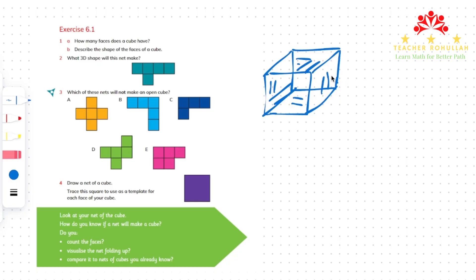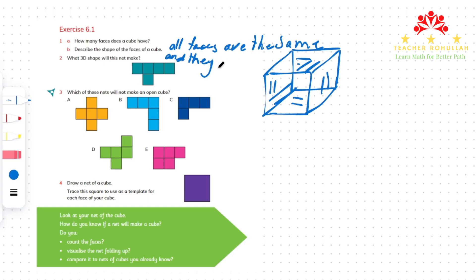Part B says describe the shape of the faces of a cube. As you can see in the cube drawn here, each face is a square. All faces are the same and they are square shaped. The shape of the faces of a cube is square. This is how we can describe the faces of a cube.